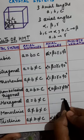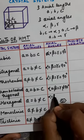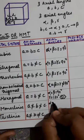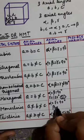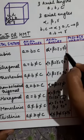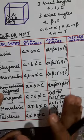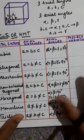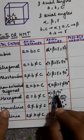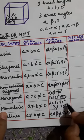In hexagonal, you know the hexagonal shape — one of the angles is 120 degrees. Here alpha and beta are 90 degrees, but gamma is equal to 120 degrees. In monoclinic, alpha and gamma are 90 degrees, but beta is not equal to 90 degrees. So these are the axial angles for the 7 crystal systems — first three all 90, rhombohedral all equal but not 90, hexagonal gamma = 120, monoclinic beta ≠ 90.